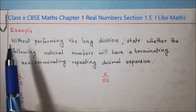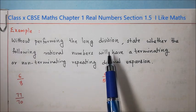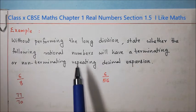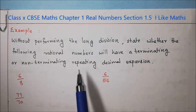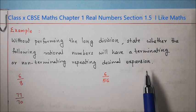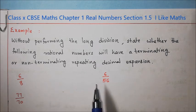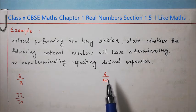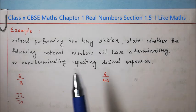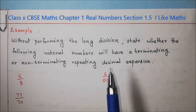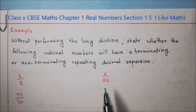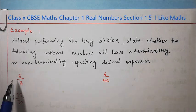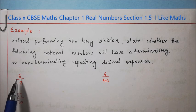Let us do a simple example: Without performing long division, state whether the following rational numbers will have a terminating or non-terminating repeating decimal expansion. Three rational numbers are given. Let us start with the first one: numerator 6, denominator 8. There could be common factors.